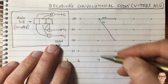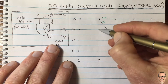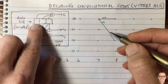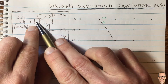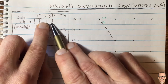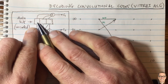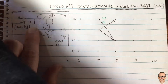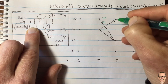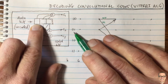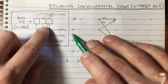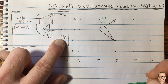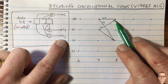Let's fill in the rest of the trellis between times 7 and 8. From state 01 with a 0 coming in, you transition to state 00. With a 1 coming in, you transition to state 10. If you're in state 01 and there's a 0 next, the register becomes 001, giving coded bits 111 along this stream. And for the other branch, the coded bits would be 010.